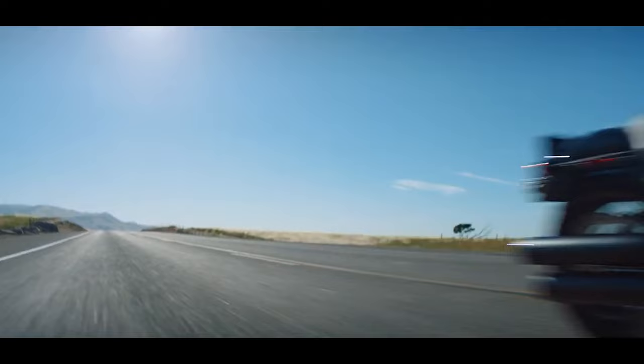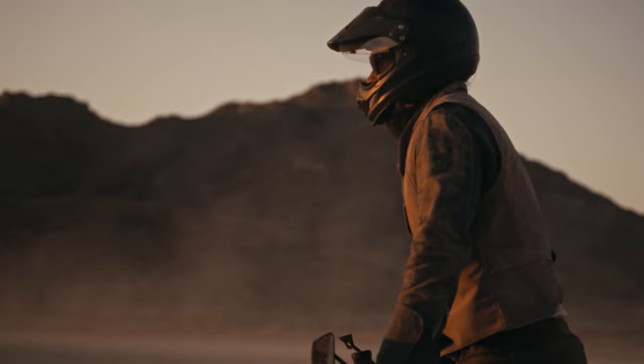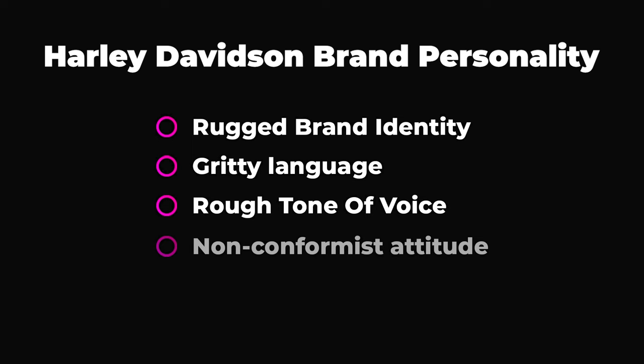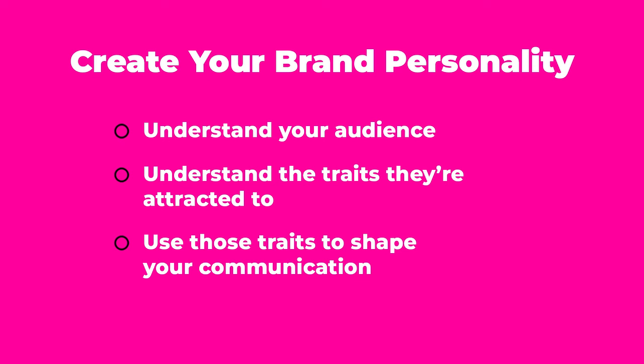Harley Davidson is a perfect example of a brand with personality. Throughout the brand experience — from the copy on their website to the image style, to their marketing and advertisements — Harley's communication is laced with personality. Harley's target audience are rebels at heart, and they use that rebellious spirit throughout the experience, which includes a rugged brand identity, gritty language, a rough tone of voice, a non-conformist attitude, and disruptive behavior. Harley loves to go against the grain of everyday society and in doing so they endear themselves to the inner rebel of their audience. When defining a personality for your brand, first understand your audience and the traits they're attracted to, then embed those traits into your communication strategy.